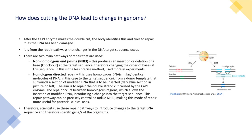Next to discuss is how making a double-stranded cut in the target sequence leads to a change in the genome. After the Cas9 enzyme makes a double-stranded cut at the target sequence, the target organism's body identifies this and tries to repair it as the DNA has been damaged. It is from these repair pathways that changes in the DNA target sequence occur.